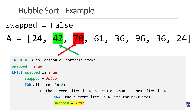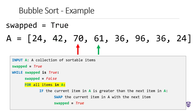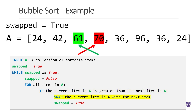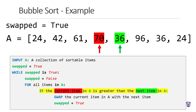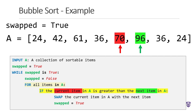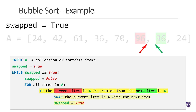Next, we update our swapped variable. Setting this to true lets us know that a swap occurred in this iteration of the list and we'll need to run at least one more time before we know the list is in sorted order. We move on to the next item in the list and again check if the current item is larger than the next. The value of 70 in the current item is larger than the next item's value, so we swap the values again. We keep repeating this process — moving on, comparing, swapping if the current value is greater — until the largest value is slowly pushed to the end of the list.